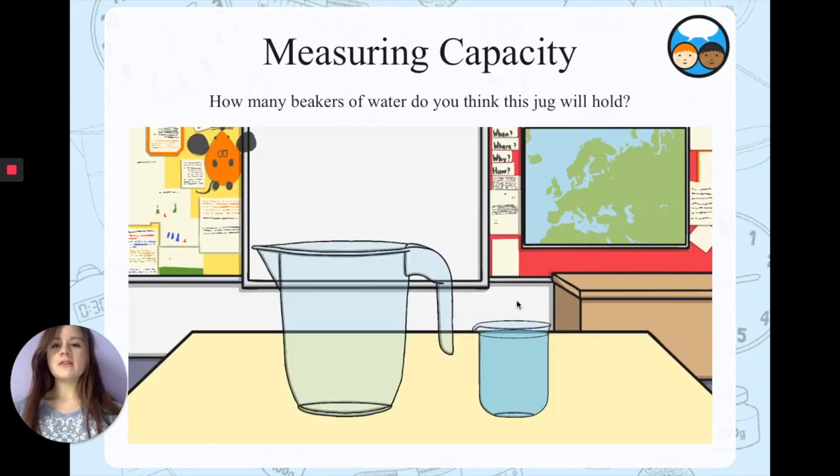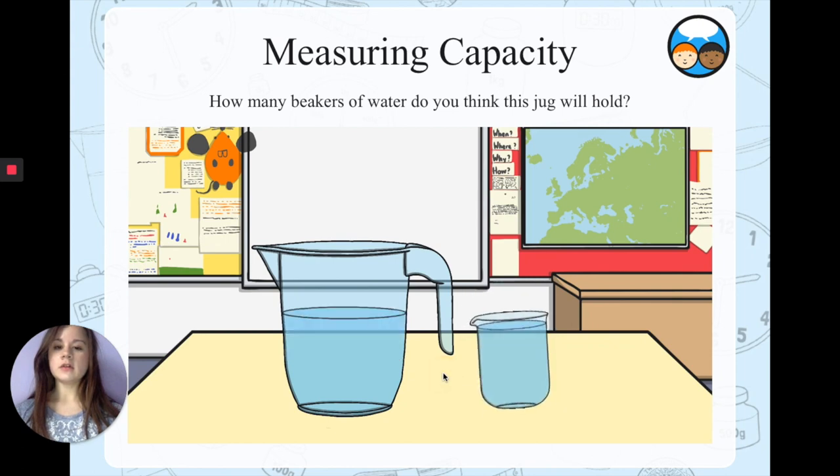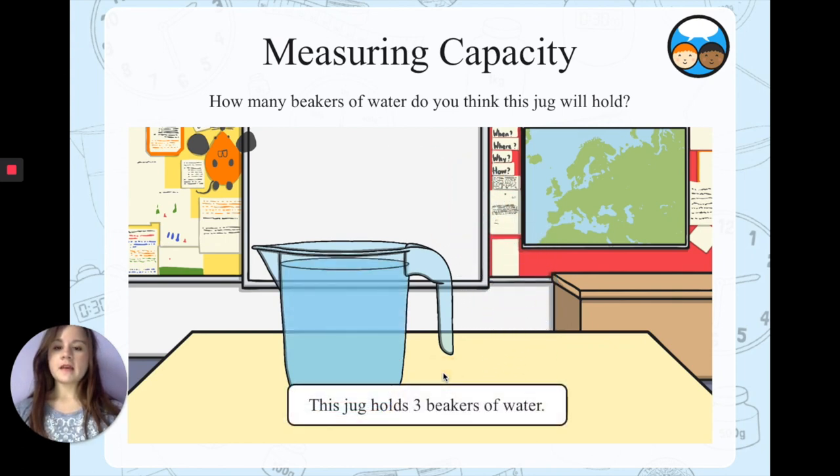Now how many beakers of water do you think that this jug will hold? So this big one over here is the jug and this little one is the beaker. Now we're going to take water from the beaker to see how many we need to fill the jug. Let's see. One, but we can still fill some more. Two, and three. This jug holds three beakers of water.